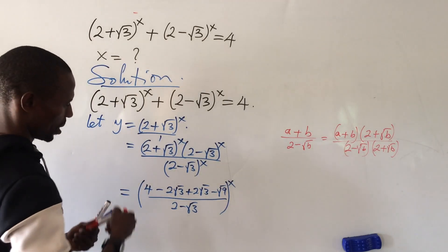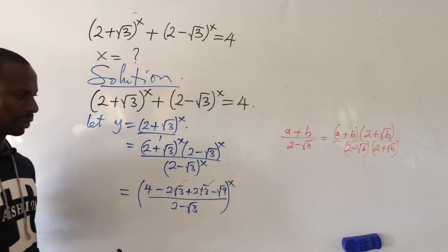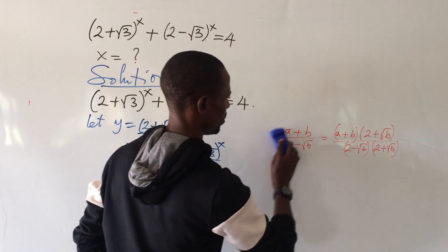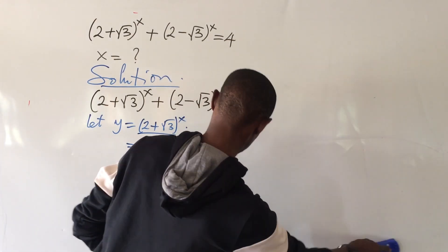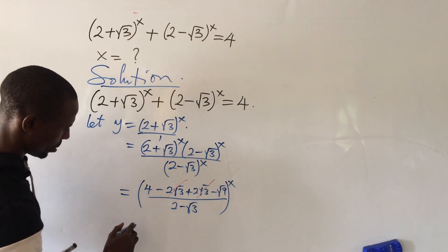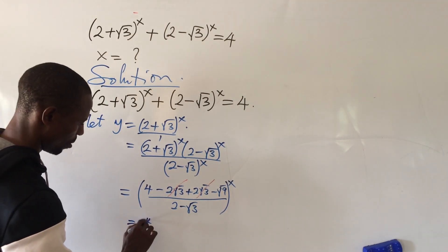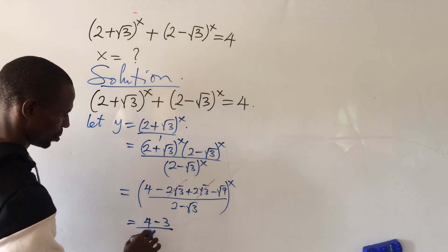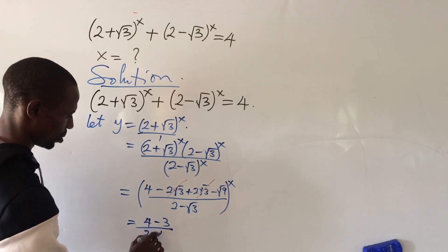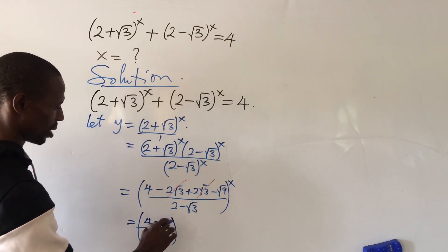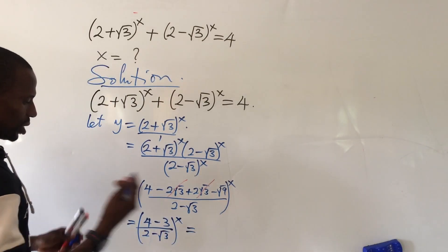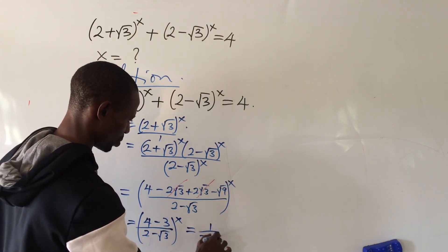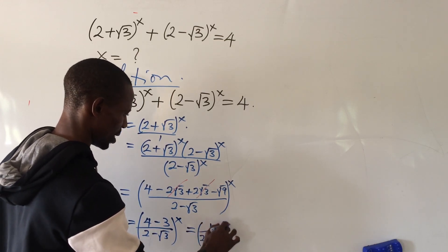The middle terms cancel. The square root of 9 is 3 because it's a perfect square. So from this, we end up with 4 minus 3, all over (2 - √3), all to the power of x. Which automatically gives us 1 all over (2 - √3) to the power of x.